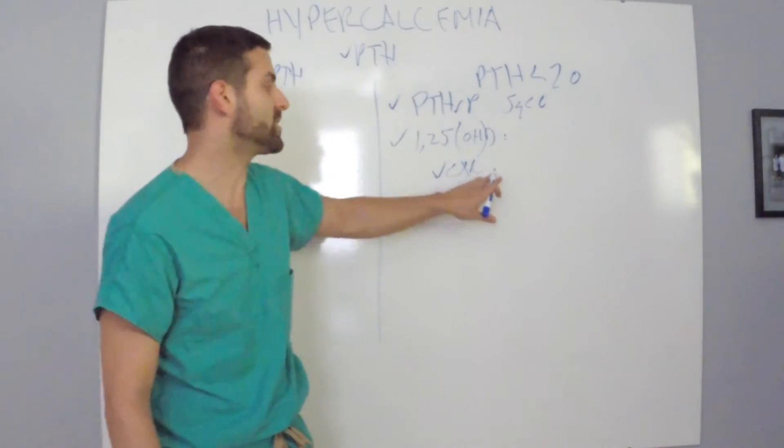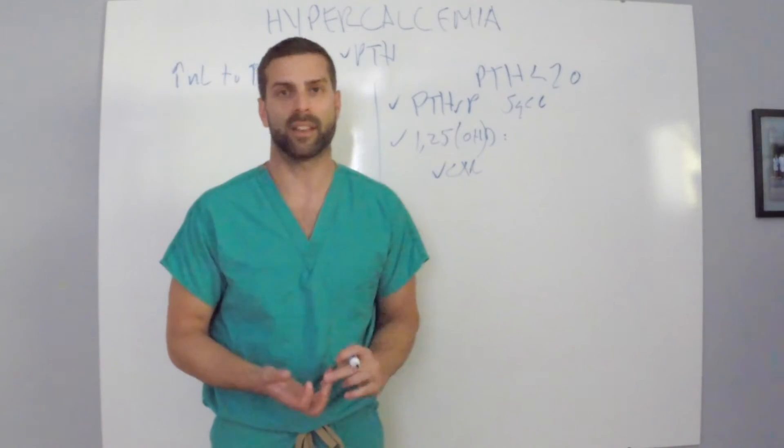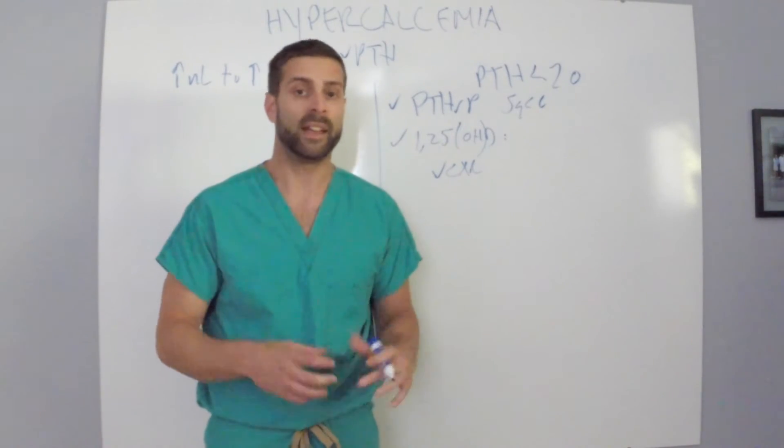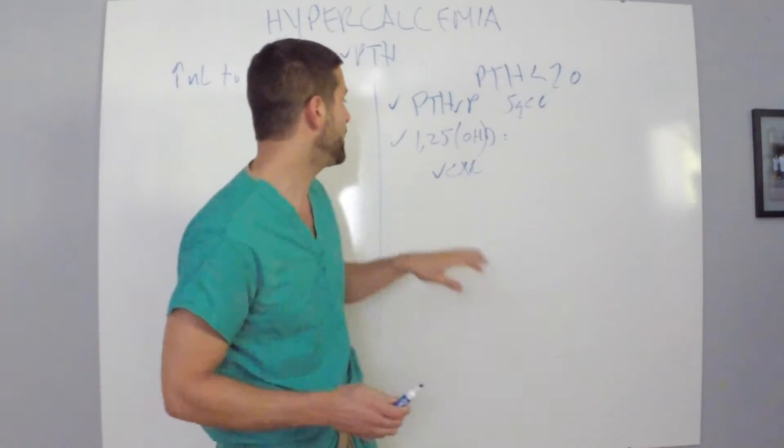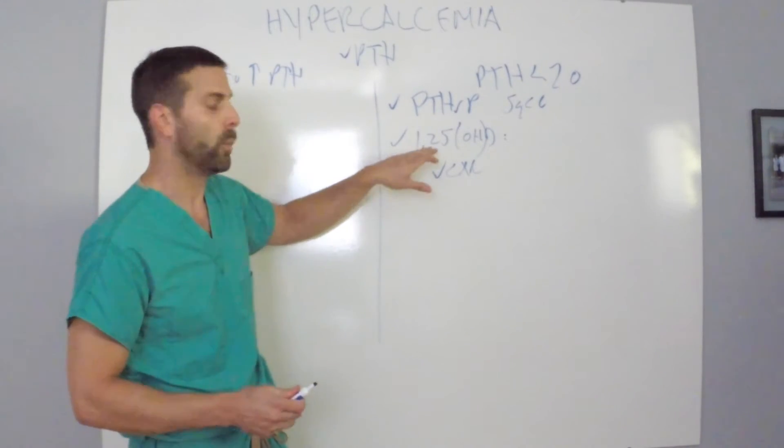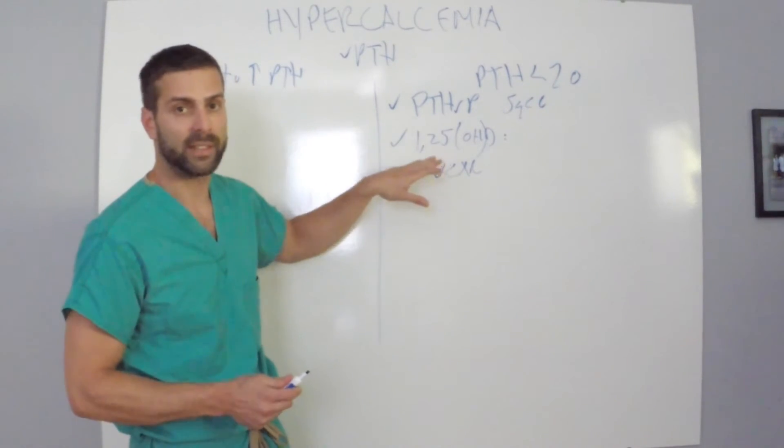So you're going to check a chest X-ray, and you're going to see that these patients are the ones who have sarcoid, the patients who have B-cell lymphoma, the patients who have TB, any type of granulomatous disease could go ahead and present itself with an elevated 125-hydroxyvitamin D.